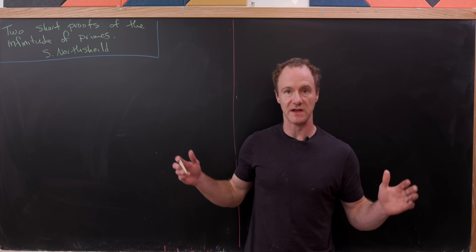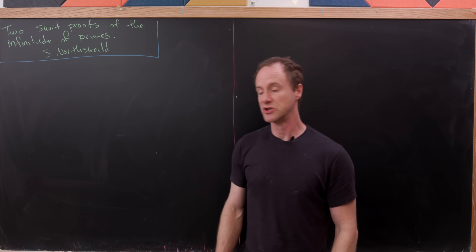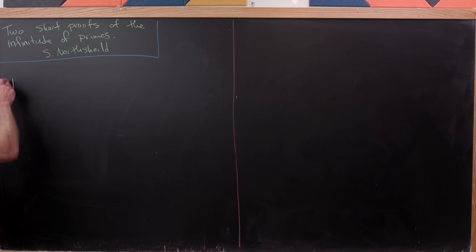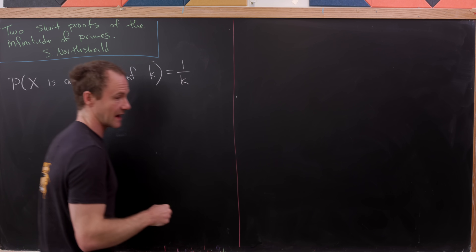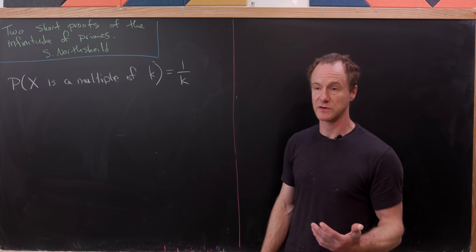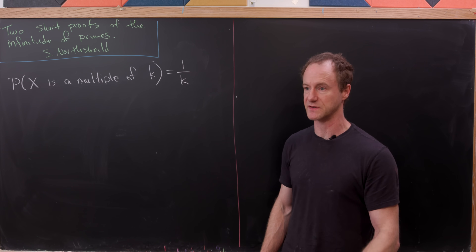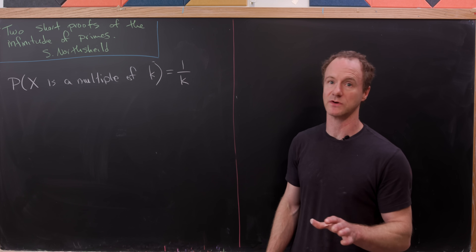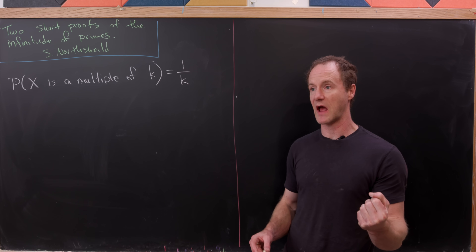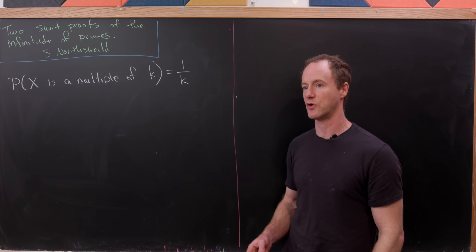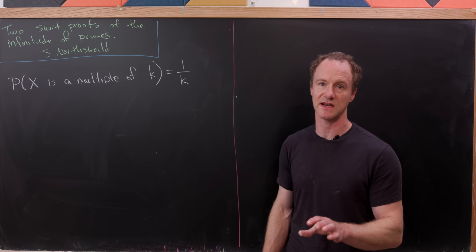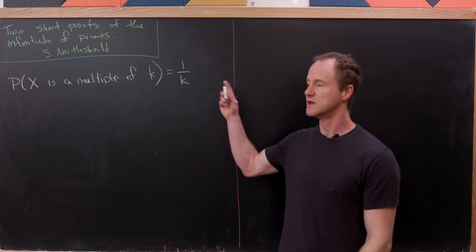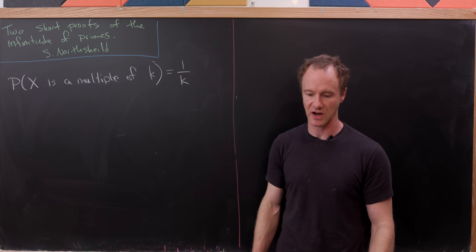Our next proof of the infinitude of primes is a probabilistic proof. We start with the fact that the probability a number x is a multiple of a natural number k equals 1/k. For instance, half of all natural numbers are multiples of 2, so there's a 1/2 chance a randomly chosen number is a multiple of 2; similarly a 1/3 chance for multiples of 3, and so on.